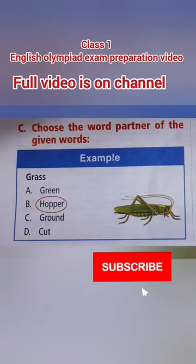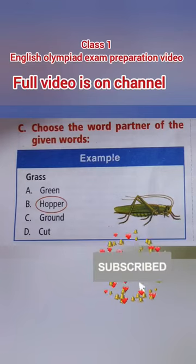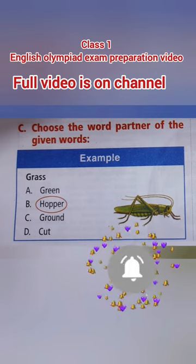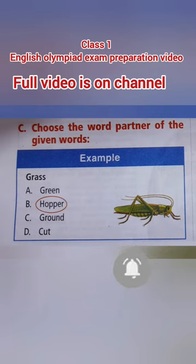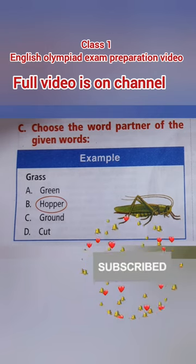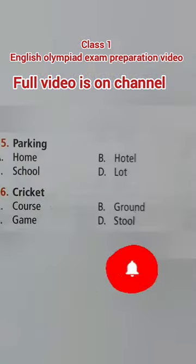Word partner for example: grass. Option A: green, Option B: hopper, Option C: ground, Option D: cut. The partner of the word grass is hopper, because the full word is grasshopper.